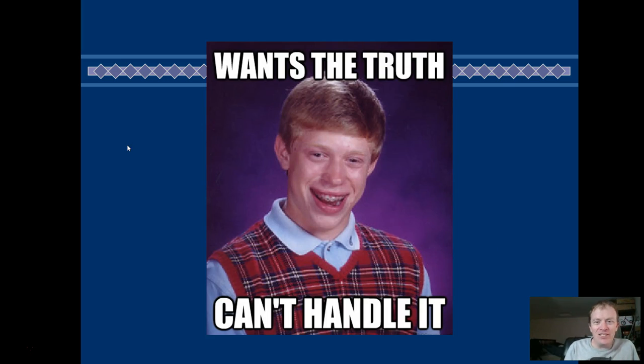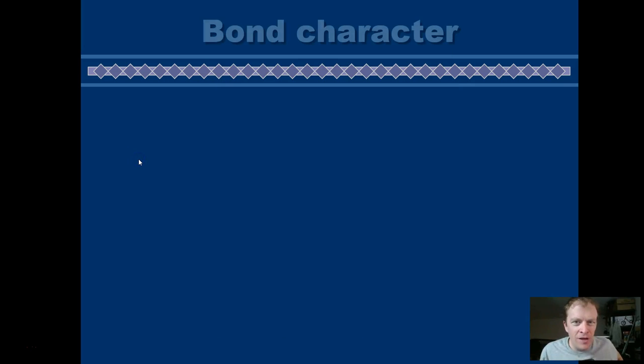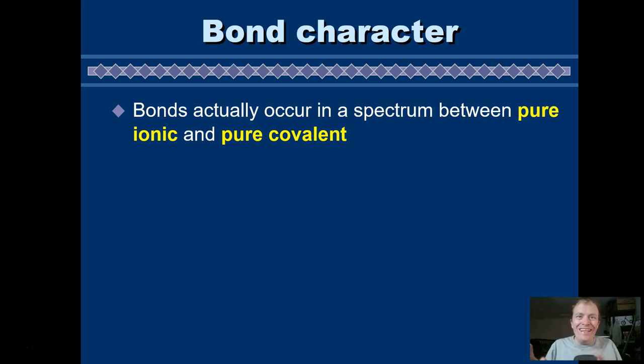As it turns out, it's a little more complicated than you've been led to believe. But we're going to talk about something called bond character. This is something you'll hear referenced like in IB exams and things like that quite a bit. It's not really the case that bonds are either ionic or covalent. It's actually a little bit of everything and can be in between.